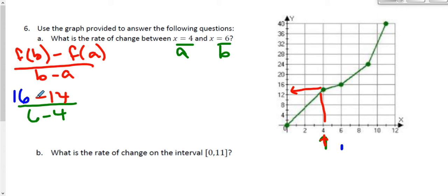So 16 minus 14. So to finish up this problem, all I have to do is simplify these numbers. Subtract my y values, I get the number 2. Subtract my x values, I get the number 2. And my final answer is 2 divided by 2, which is 1. So the rate of change between 4 and 6 is 1. It looks like it's going up 1 and over 1.